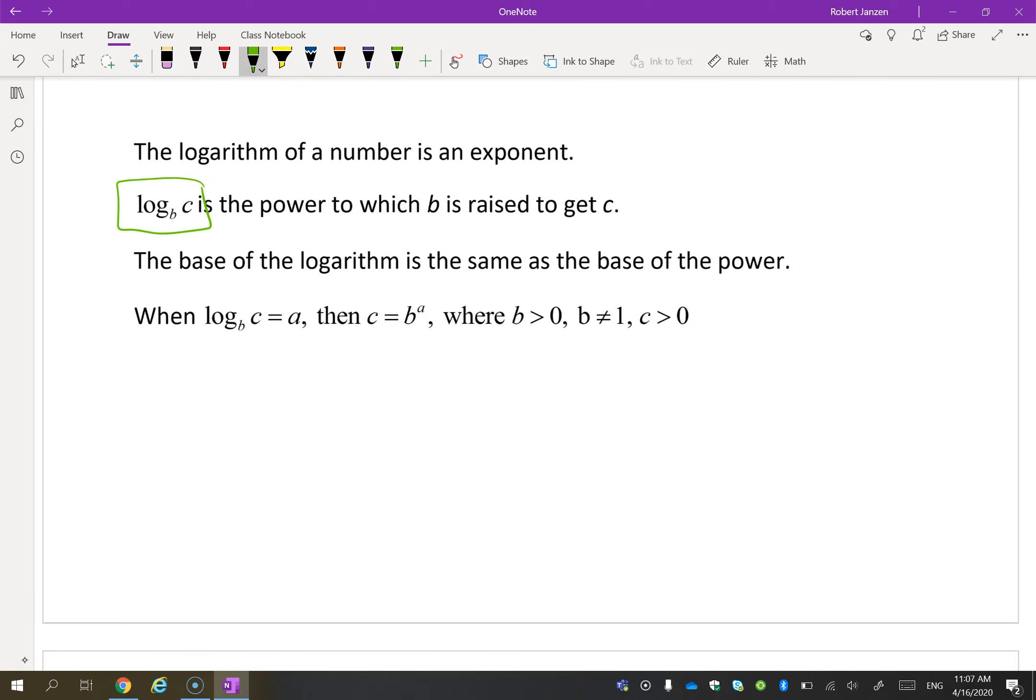A couple of conditions about that. b has to be greater than 0, b cannot be 1, c has to be greater than 0. If you think about that, if you have an exponent with a base of b, no matter what you put here, it's always 1, so you can't have a base that is 1. It also can't be 0, or it has to be bigger than 0, it has to be a positive number, in other words.